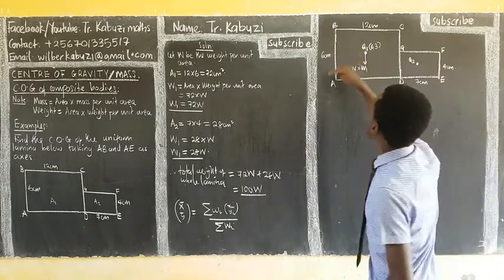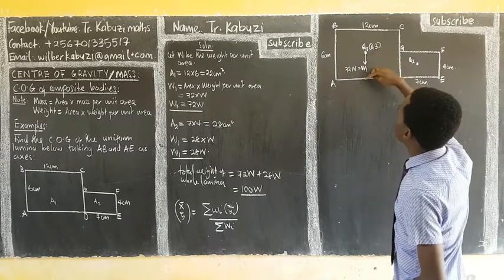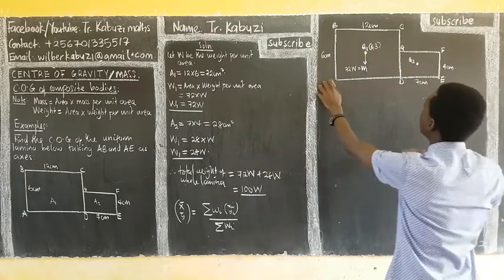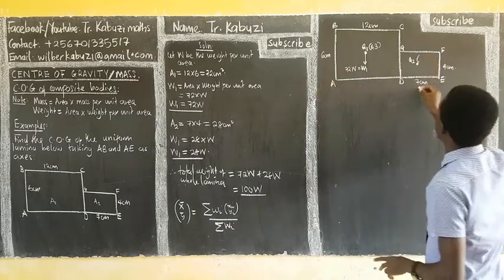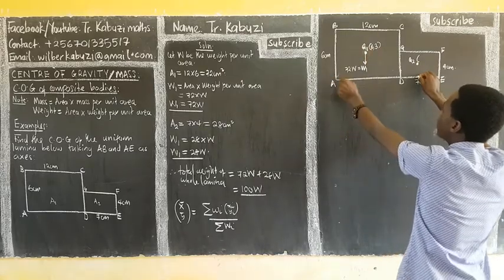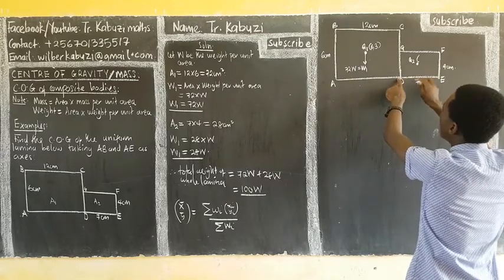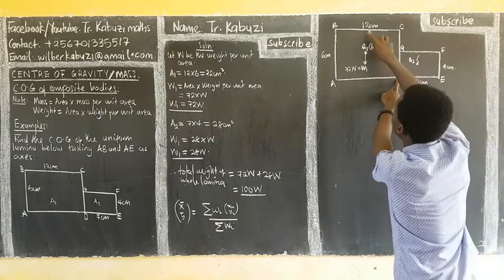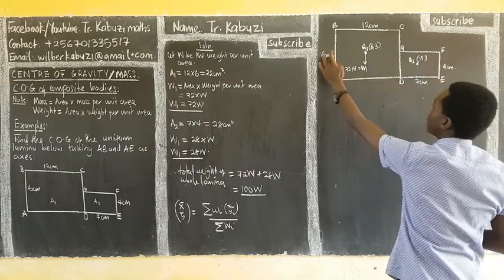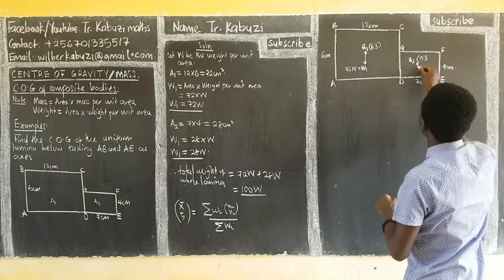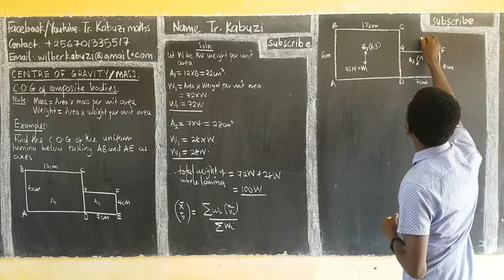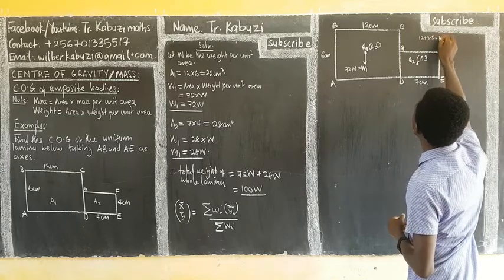For the second rectangle, we are measuring from axes AB and AE. The center of this rectangle is at its middle. Since the second section has width 7, half of that is 3.5. From the AB axis, we come 12 centimeters across the first section, then add 3.5, giving us 12 + 3.5 = 15.5. So the x-coordinate for W2 is 15.5.